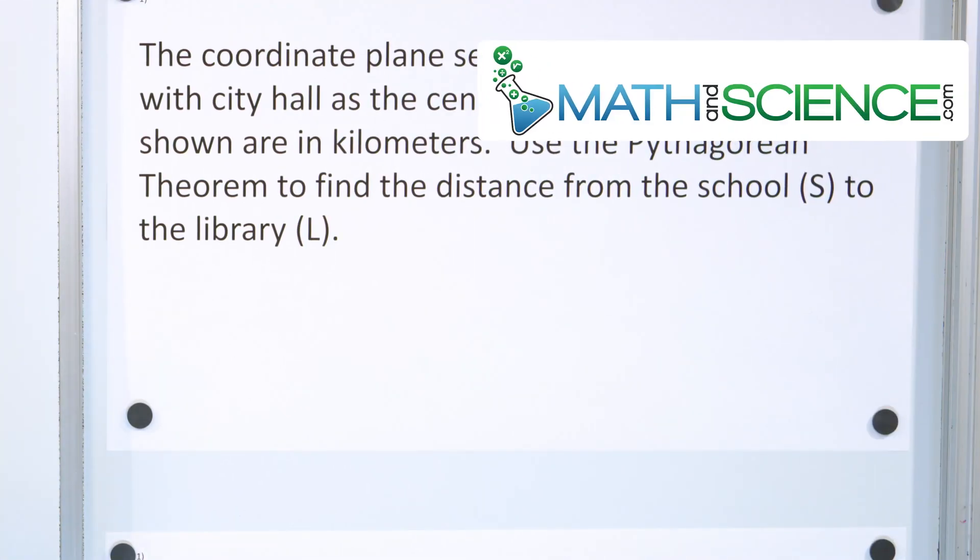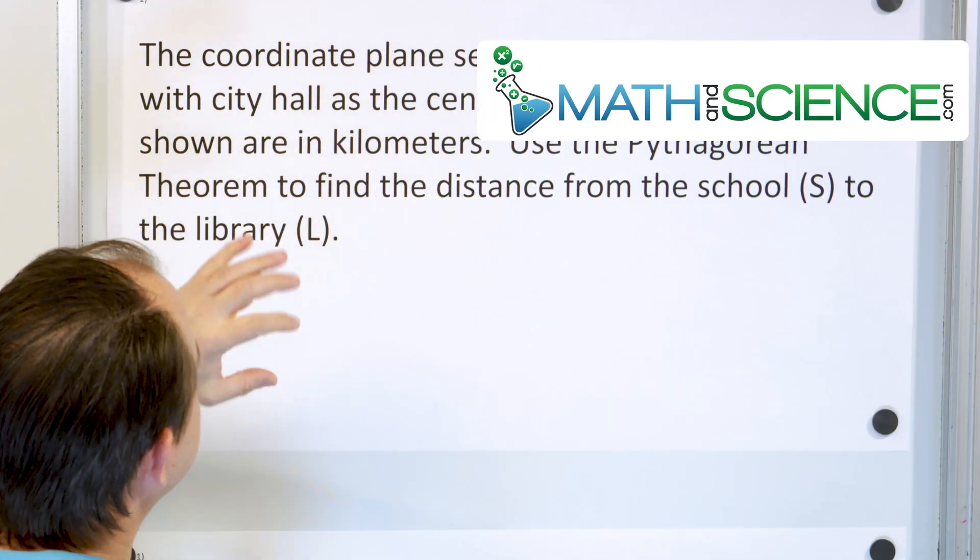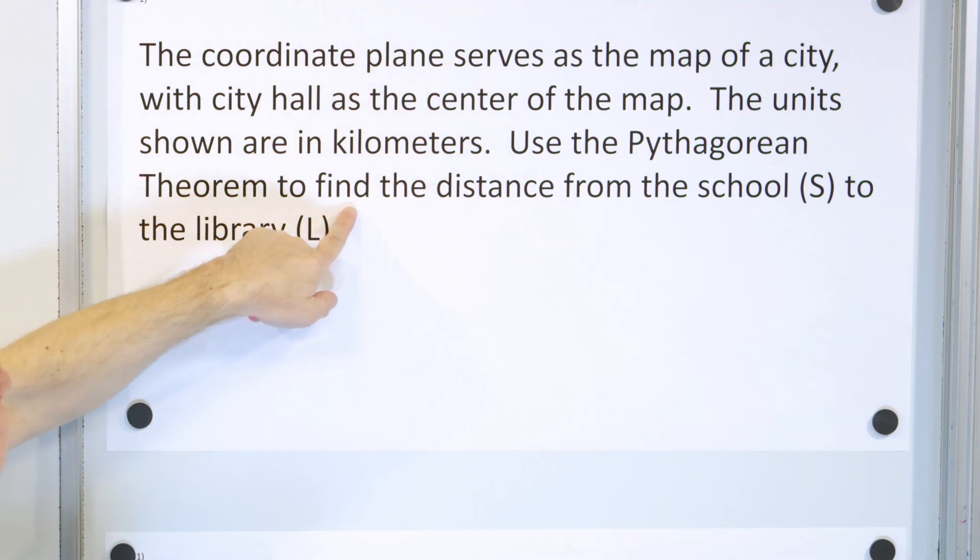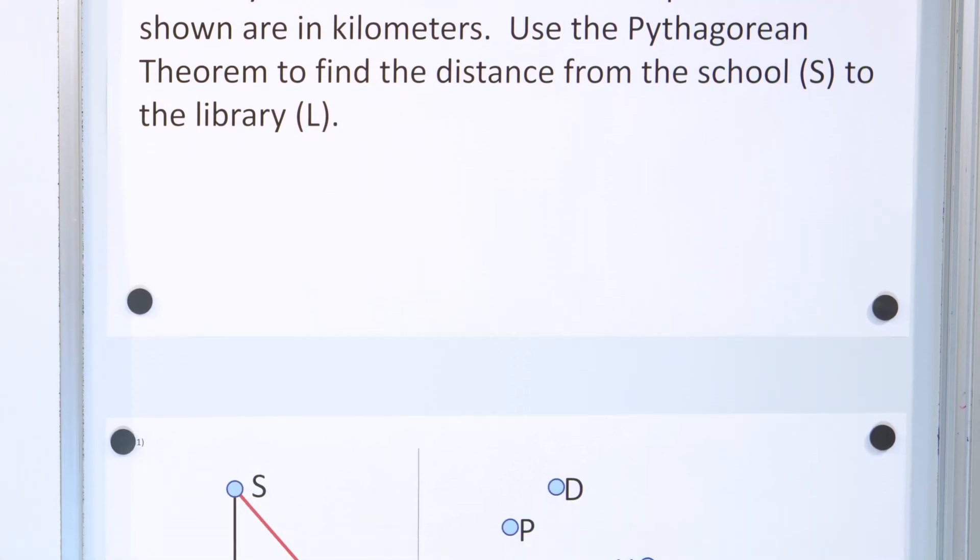So once again, as in the last lesson, we have a coordinate plane using a map of the city. The units are in kilometers. Use the Pythagorean theorem to find the distance from the school S to the library L.